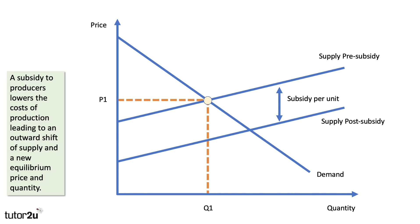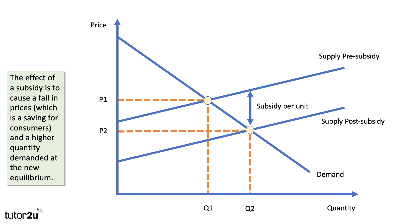The subsidy per unit is the vertical distance between the two supply curves. The impact of a subsidy is to shift the supply curve out to the right, leading to a new equilibrium price and quantity P2, Q2. The subsidy per unit — the vertical distance between the two supply curves — is quite important to get the top marks on analysis.